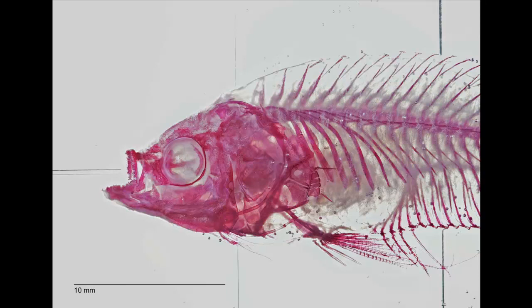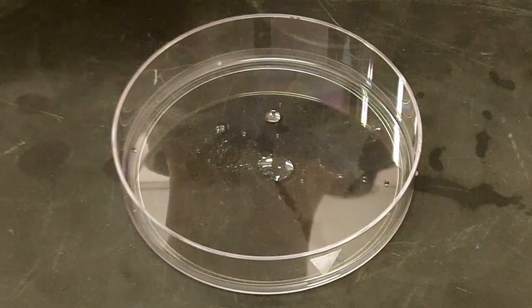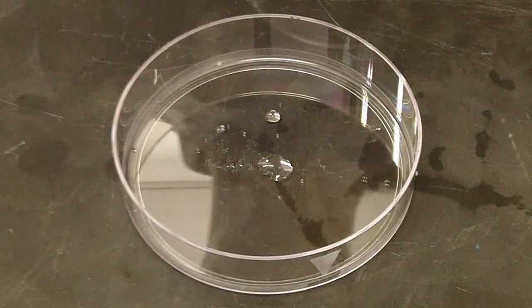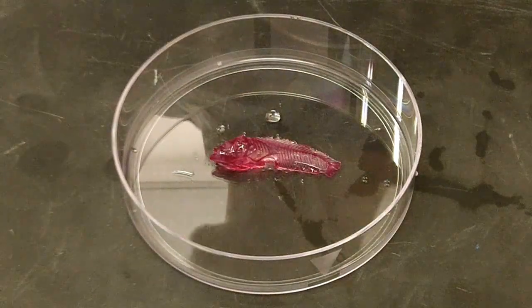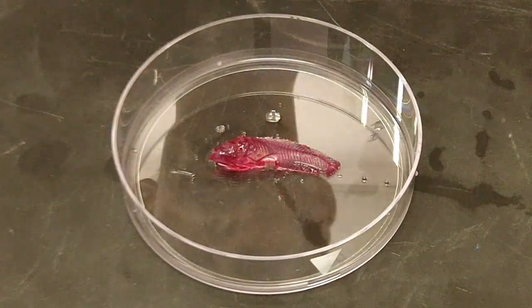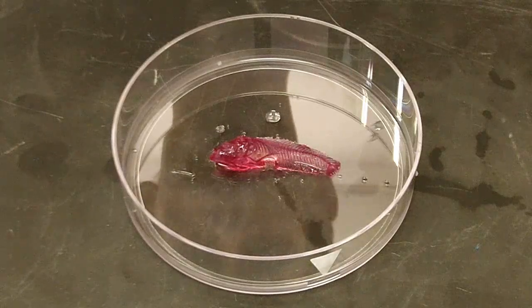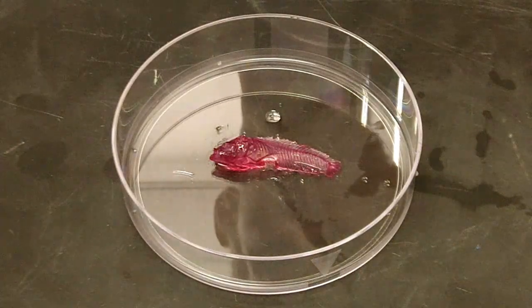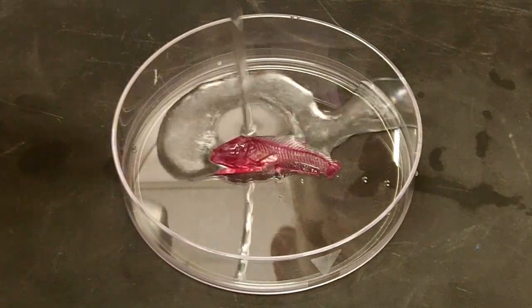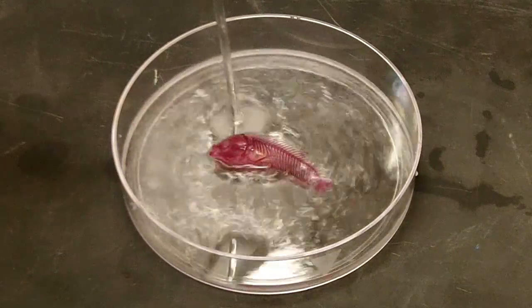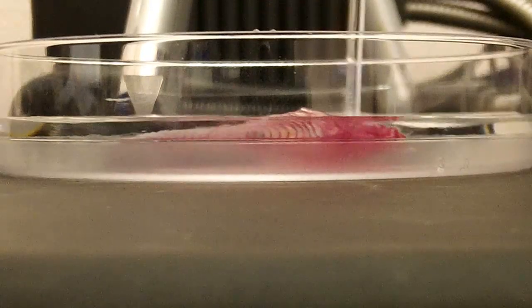The first thing I did to prepare each specimen was to remove all scales and loose tissue. The next step was to place the specimen in the petri dish, which I then filled with water such that the specimen was completely covered. I found water was the best medium to take pictures of the cleared and stained fish specimens in because it allowed for the least amount of distortion with the best picture quality.